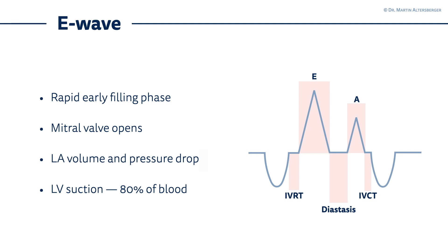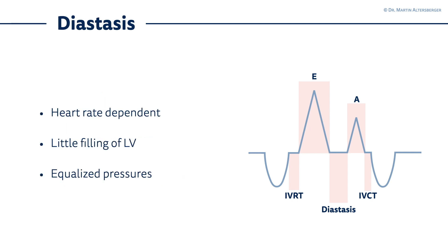The next phase, in between the E-wave and the A-wave, is the so-called diastasis. Diastasis is also a short time interval where only little filling of the LV happens because the LV already sucked in all the blood it could get. It's very heart rate dependent, so in tachycardia you might not have this time interval, and the pressures between the left atrium and the left ventricle are equalized.